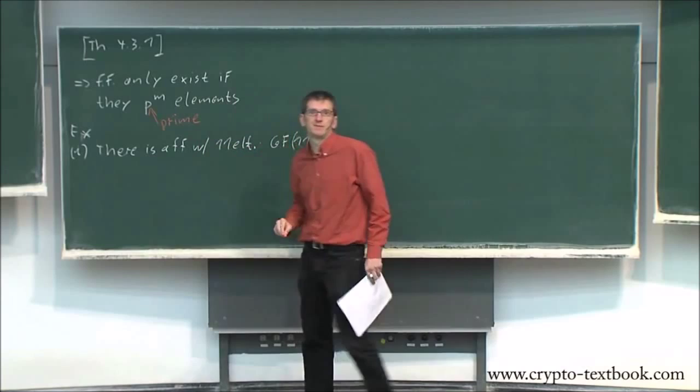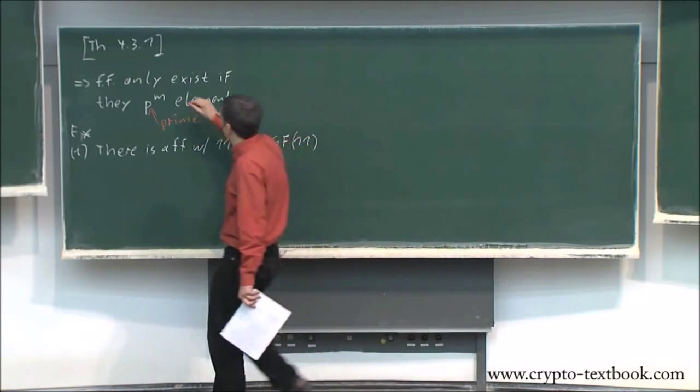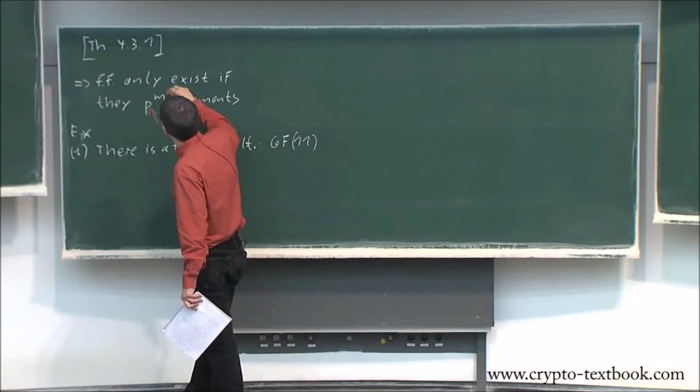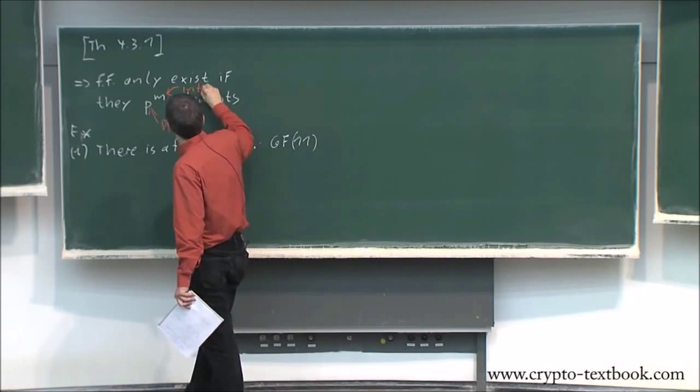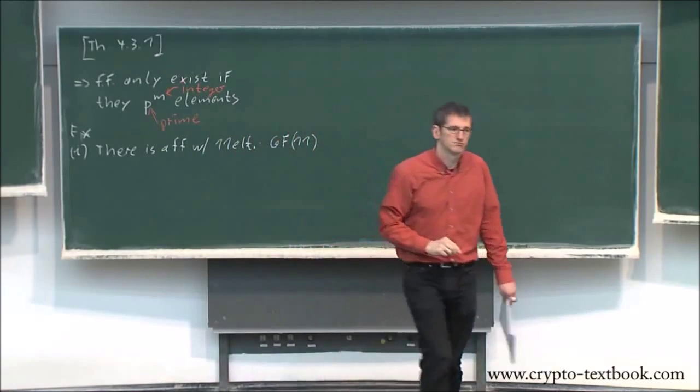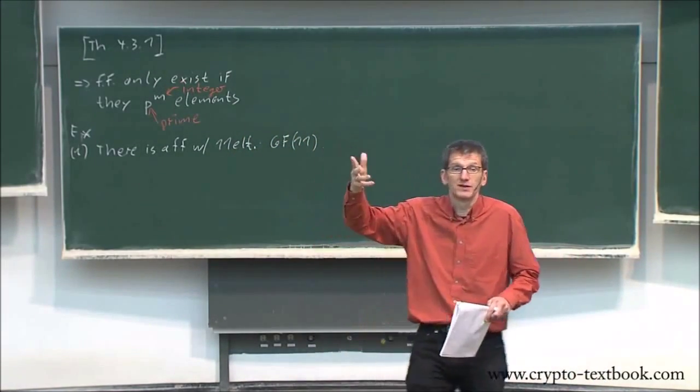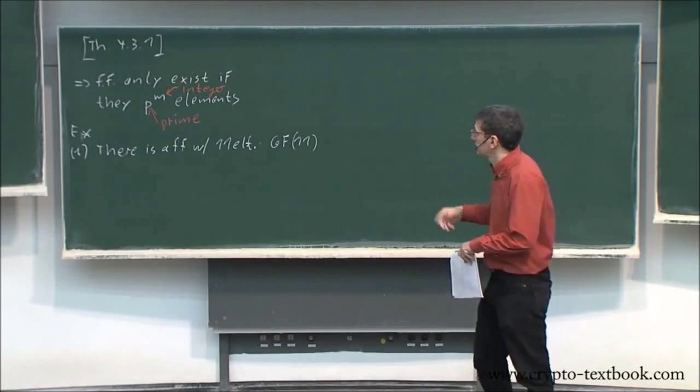P is prime and M is a positive integer. And 11 is 11 to the 1, right? P is 11, M is 1. So this is fine.